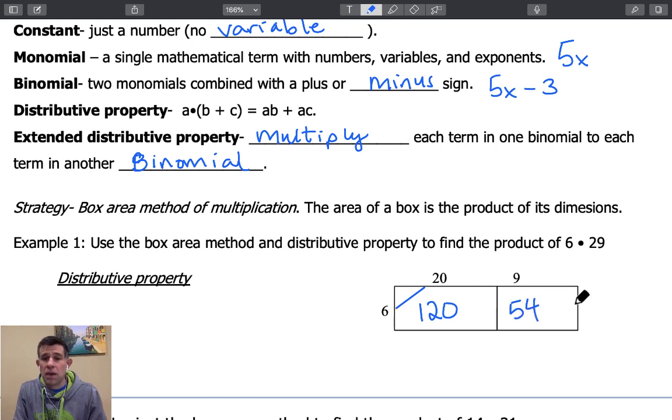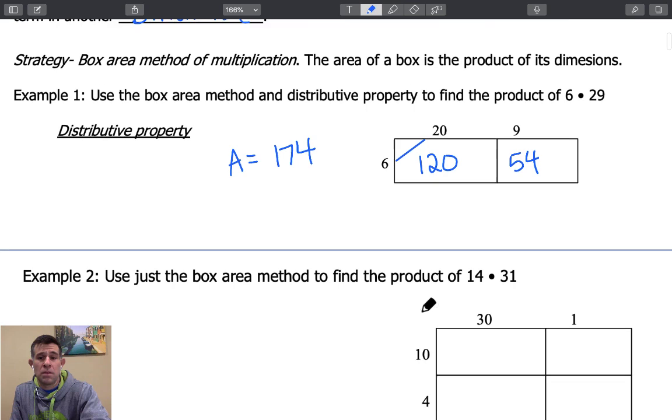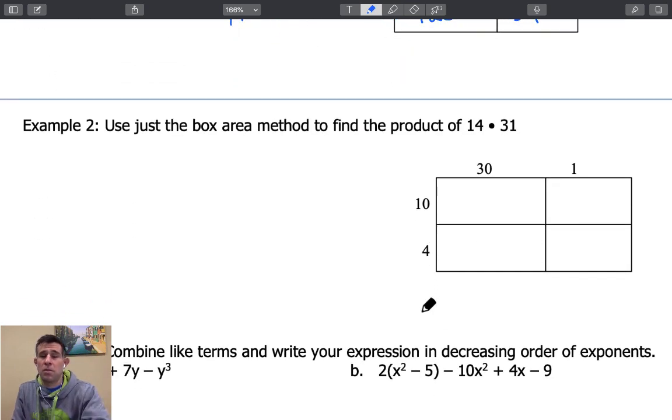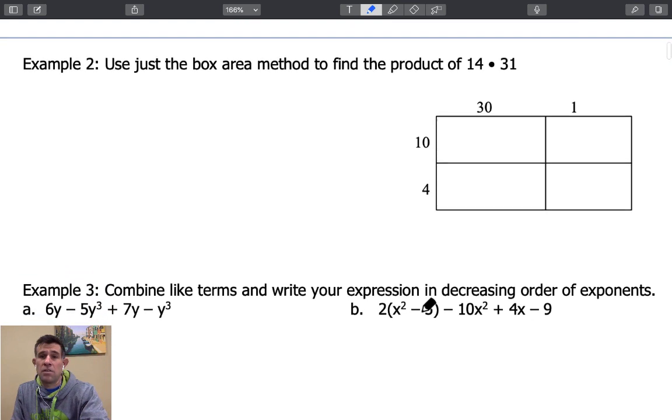We say the combined area represents the product of 6 times 29. When we add those two together, we get a combined area of 174. And therefore, the product of 6 times 29 is 174. We are going to build upon this idea of the box area method to now show that we can multiply numbers that are in the two digits.